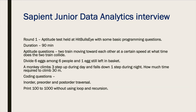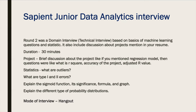The first round was an aptitude round held on the HiSet platform with some basic programming questions. The duration was 90 minutes and it was divided into two parts: an aptitude section and a programming skills section. Some aptitude questions were like: if two trains are moving toward each other at different speeds, when will they collide? Or, how do you divide six eggs among six people with one egg left in the basket? For coding, there were basic questions on loops and trees — one was to print a tree in pre-order and post-order, and another was to print numbers from 1,000 to 10,000 without using loops or recursion, basically to check your IQ and coding ability.